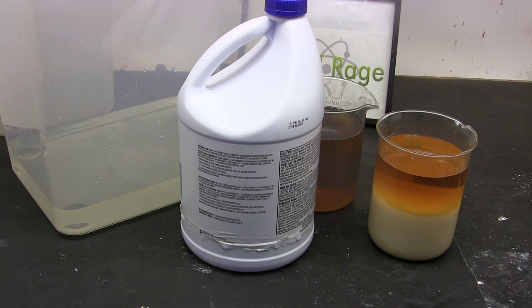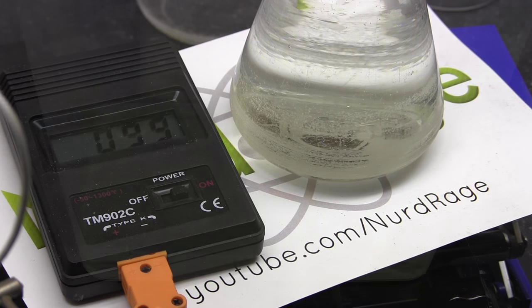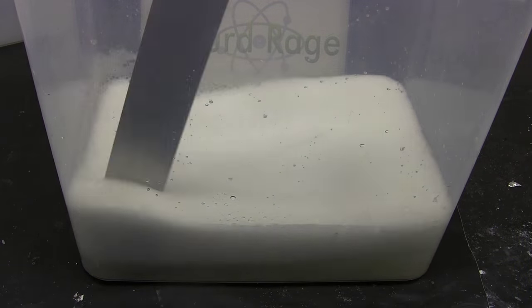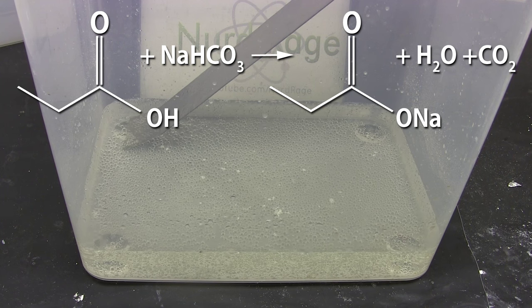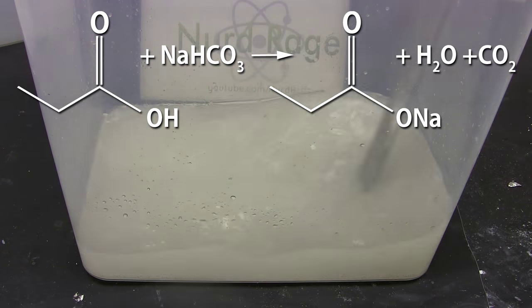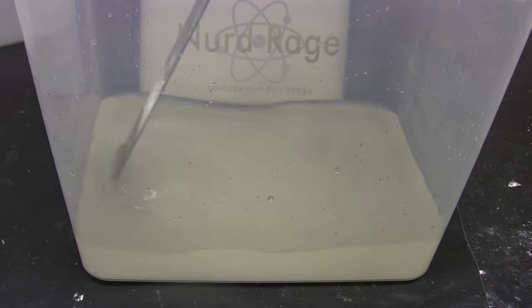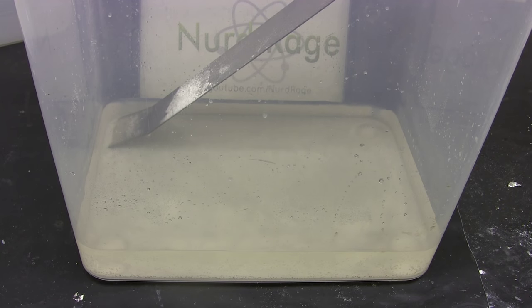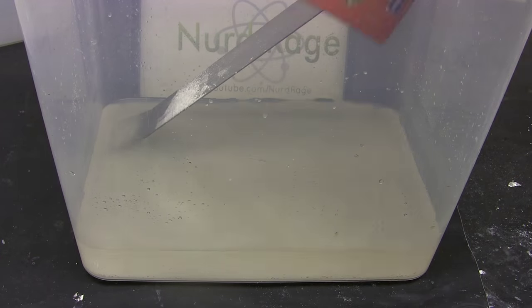Anyway, we now have to separate the water from the propionic acid. We can't just distill it since it forms an azeotrope. So we're going to go a roundabout way and add sodium bicarbonate to react with the propionic acid and convert it back into sodium propionate. Since we don't know exactly how much there is we'll have to crudely titrate by adding small amounts of sodium bicarbonate and stopping it when it no longer fizzes. At this point all the acids have reacted.